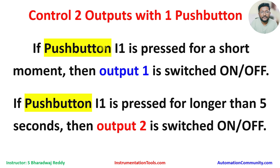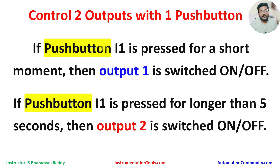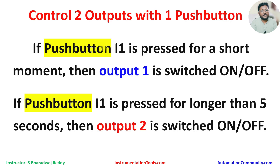The default first-time state is off. If the push button is pressed and held for five seconds or more, then output two will be controlled. The default state is off. When we press and hold the push button for five seconds, output two will be on. If pressed again for five seconds, output two will be off.